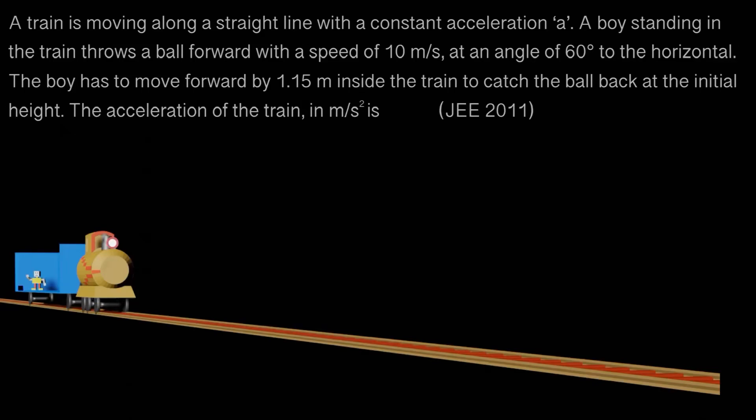Good morning all of you. There is a train here which is accelerating. Inside this train there is a boy who is throwing a ball at an angle 60 degrees with the horizontal at speed 10 meters per second. He moves inside the train by 1.15 meters to again catch the ball. We need to find the acceleration of this train.